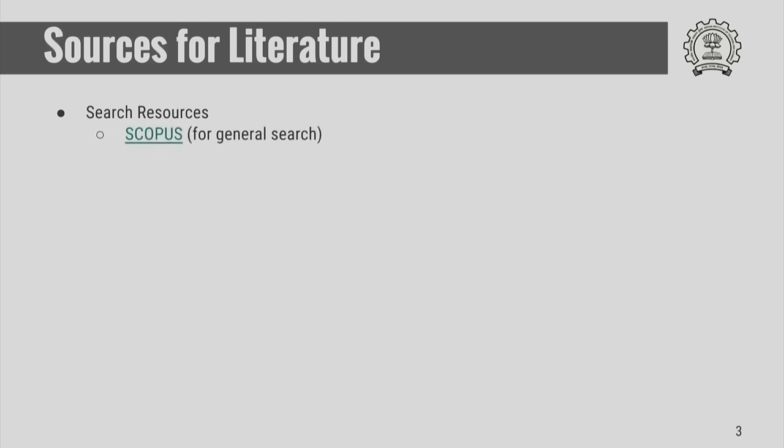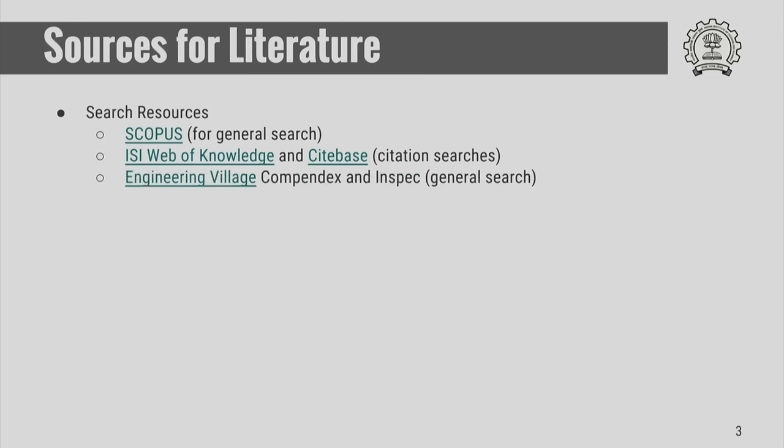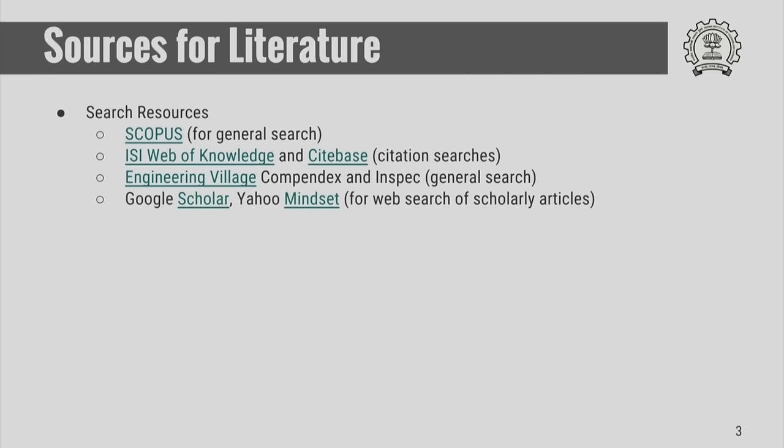There are very standard sources of scientific literature. Scopus is a widely used search engine for scientific literature and also contains a good amount from social sciences and humanities. ISI Web of Knowledge and CiteSeer are other popular search engines. Engineering Index, or Engineering Village, used to be a very commonly used index for locating scientific articles. Commercial search engines such as Google and Yahoo have special websites known as Google Scholar and Yahoo Mindset which can be used to search for scientific articles. Patent search also forms a special category in Google and Scopus, and there is a separate website known as Free Patents.